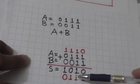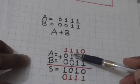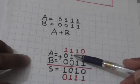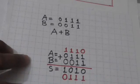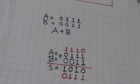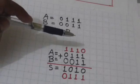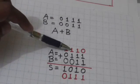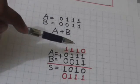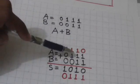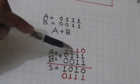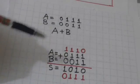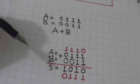This output carry one should be added with the next pair of bits, that is one and zero. Again, this addition can be performed by a full adder, where the input carry is one and the bits to be added are one and zero.